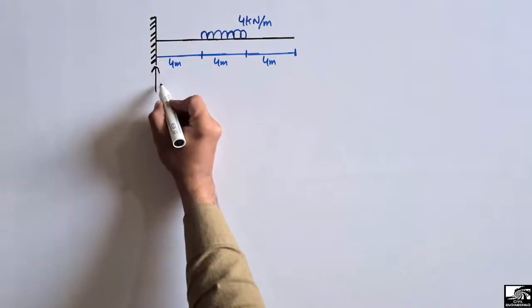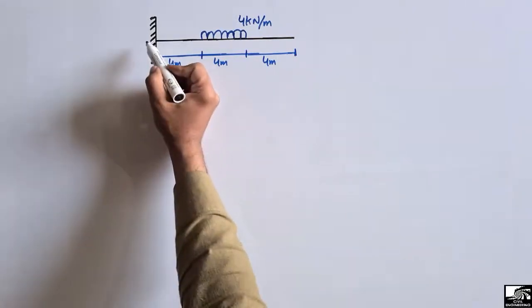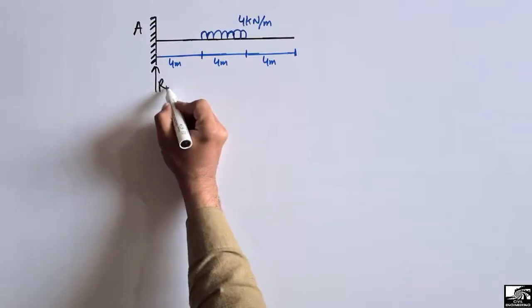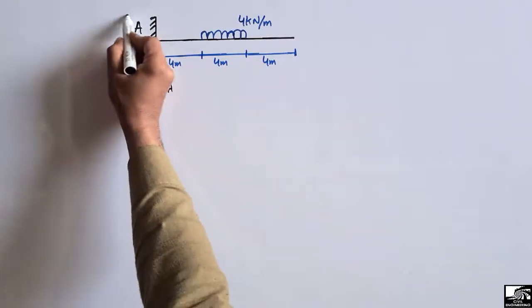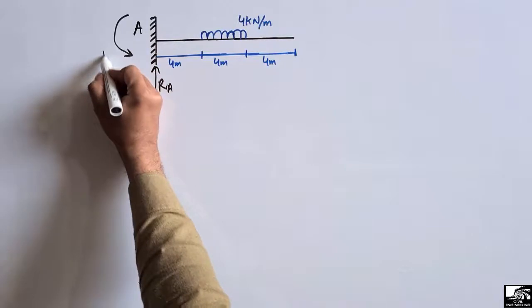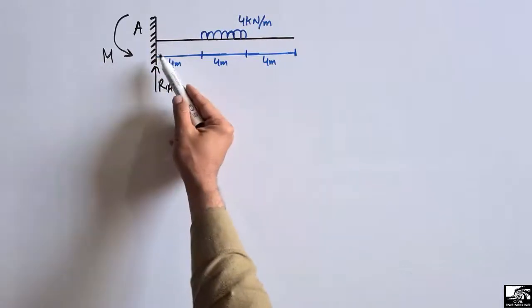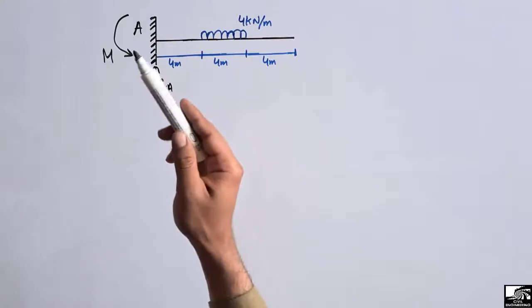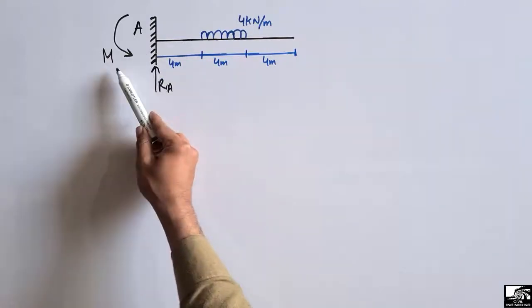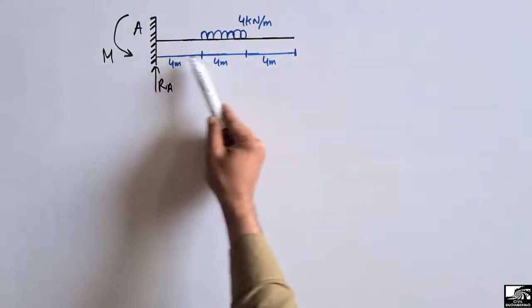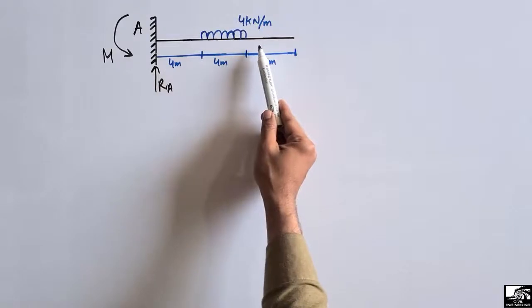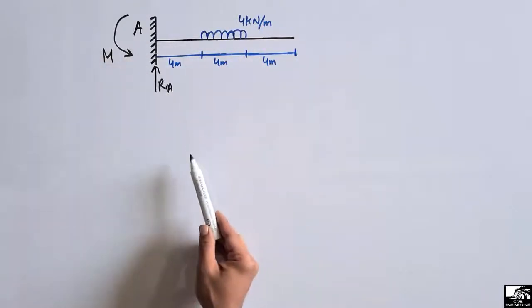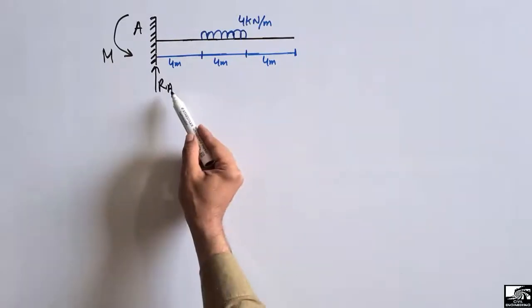Since this is a fixed support, let's call it support A. It can resist the vertical load, and it can also resist the moment M, because it is a fixed support. It can take vertical load, horizontal load, as well as moment. However, there is no horizontal load acting on this beam, so we don't need to consider any horizontal reaction for this support.